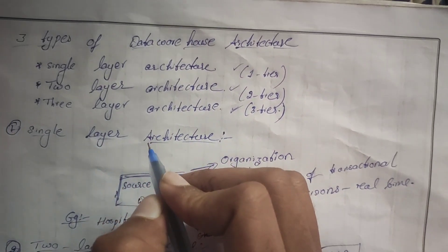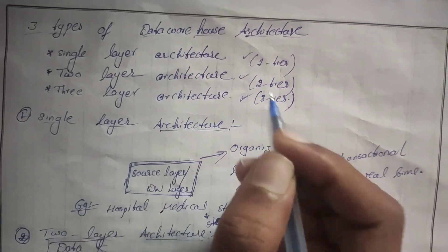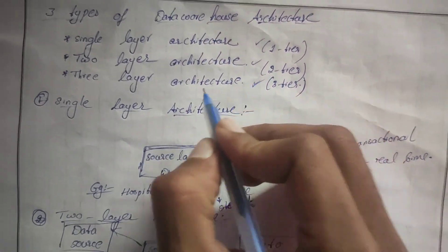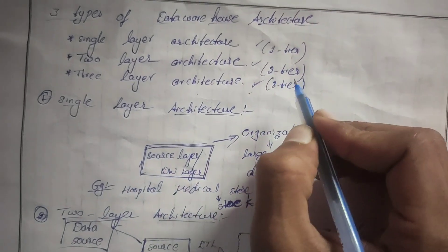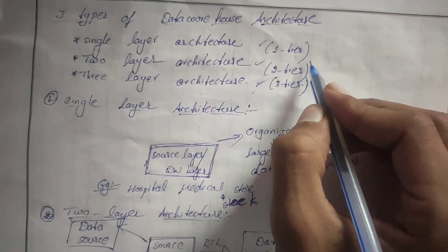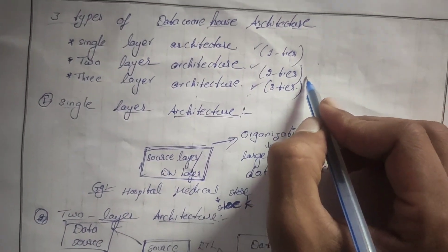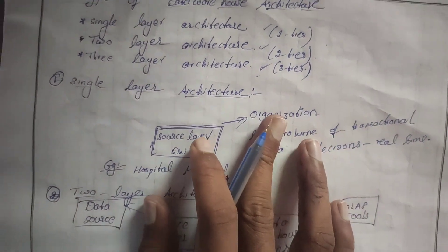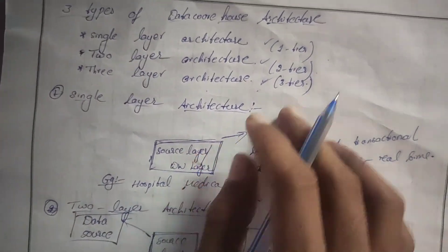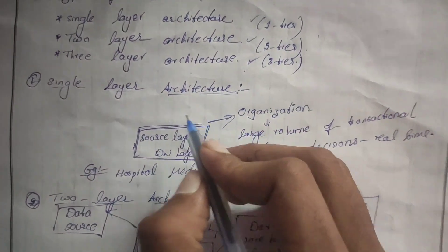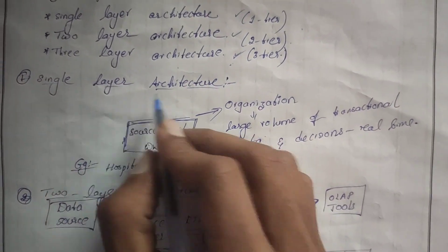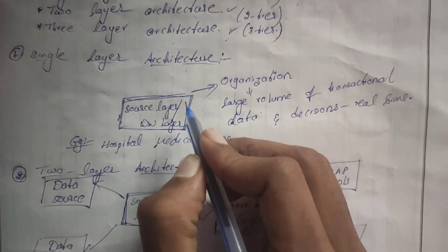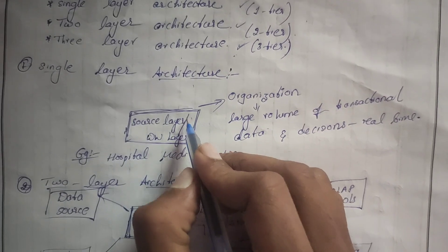There are three types of data warehouse architecture: single layer architecture, two layer architecture, and three layer architecture — or we can call them one tier, two tier, and three tier architecture. Let us discuss briefly about these three layers.